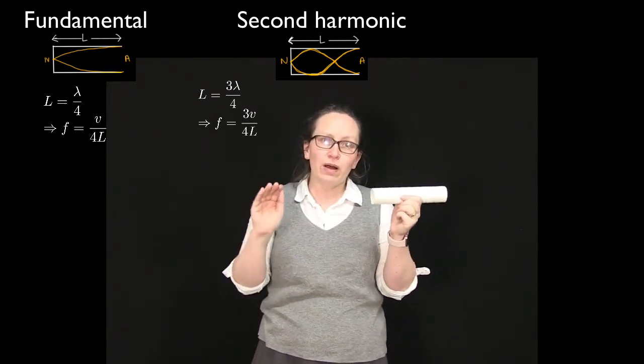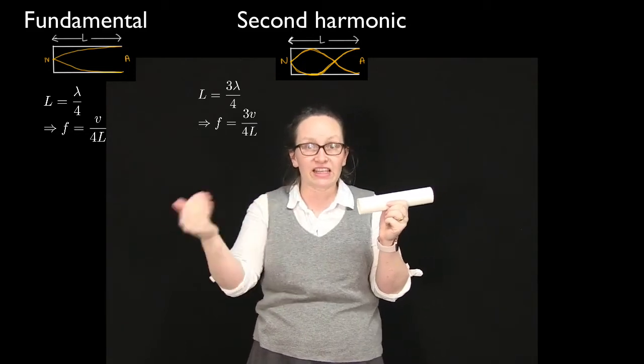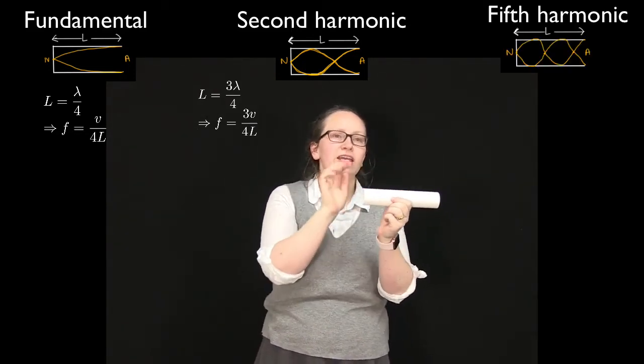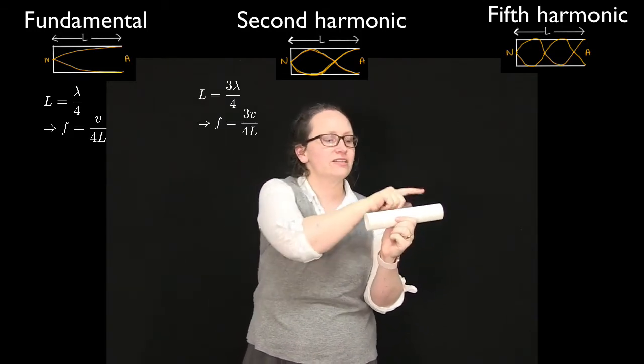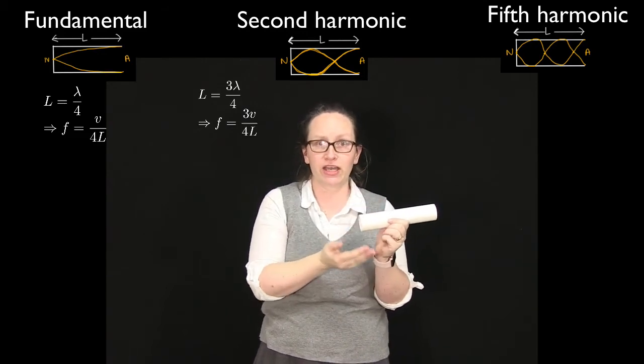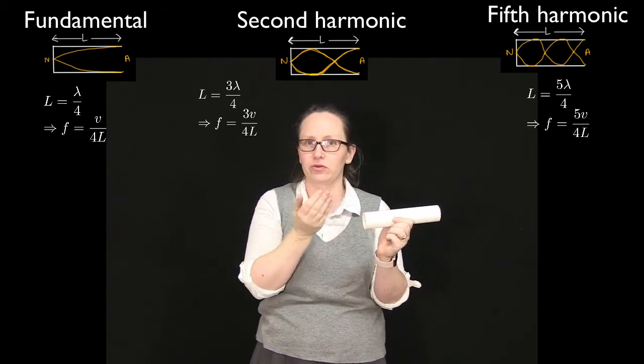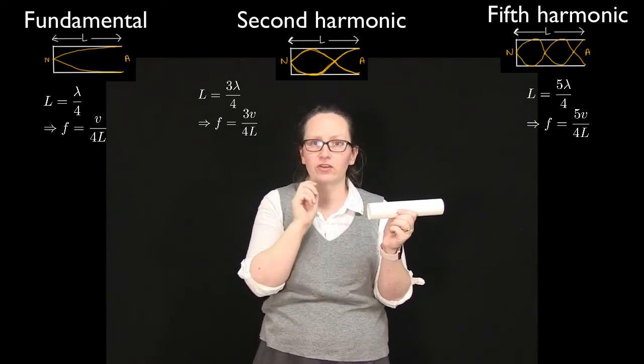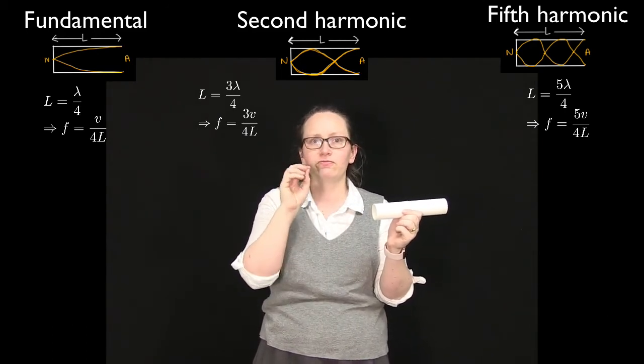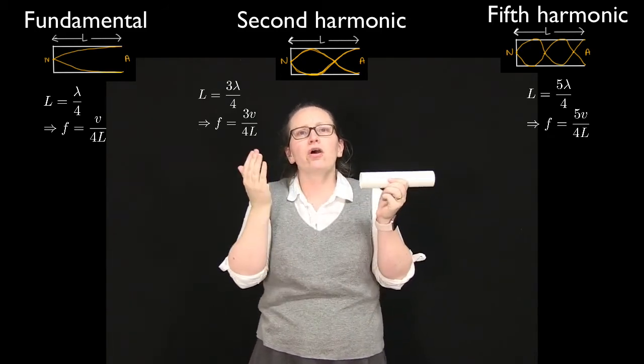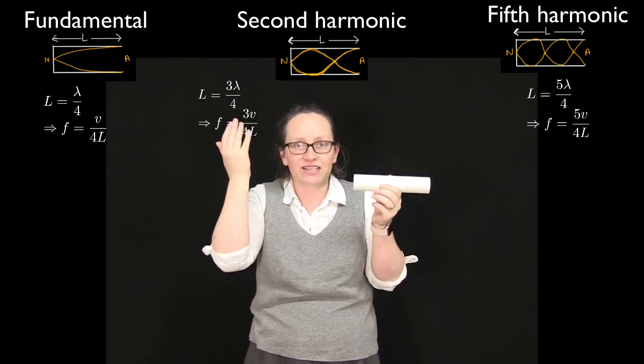Let's just consider one more harmonic now so that we can clearly see the pattern which is emerging. Okay, so antinode here, node here. The next option we can have is five quarters of a wavelength inside the pipe, in which case the length of the pipe is equal to five lambda on four. And so the frequency for this harmonic is equal to 5v over 4L. So hopefully you can now start to see the pattern.